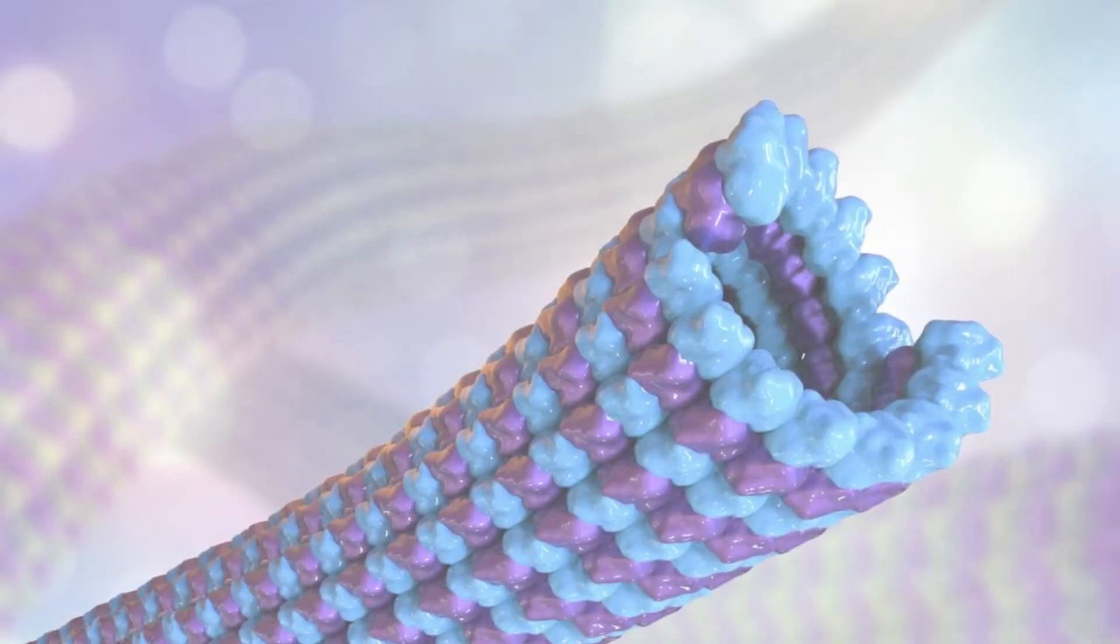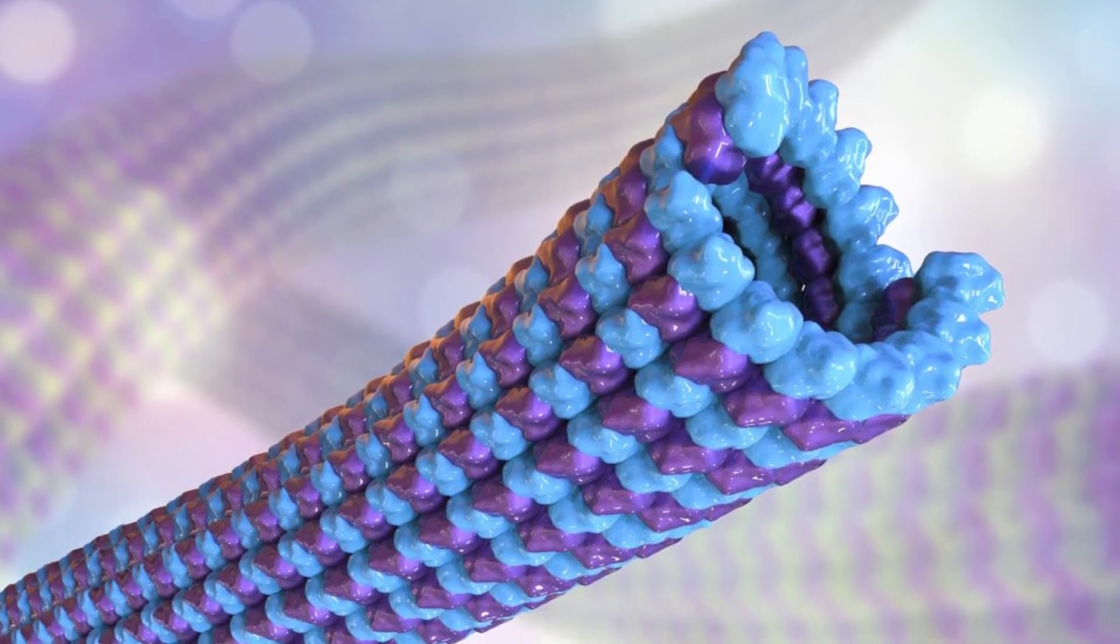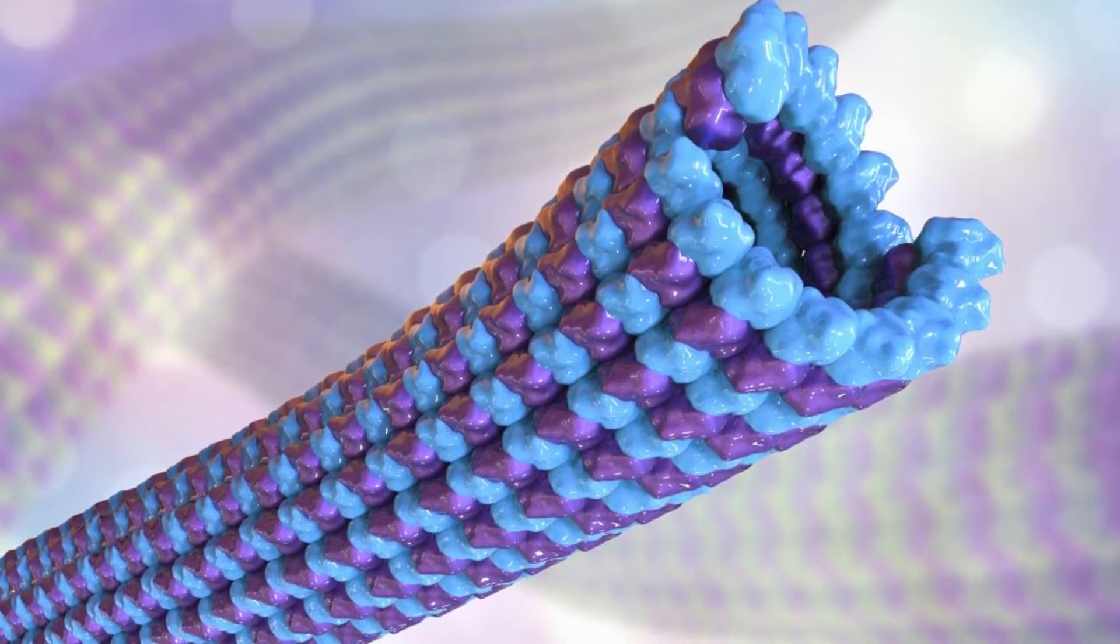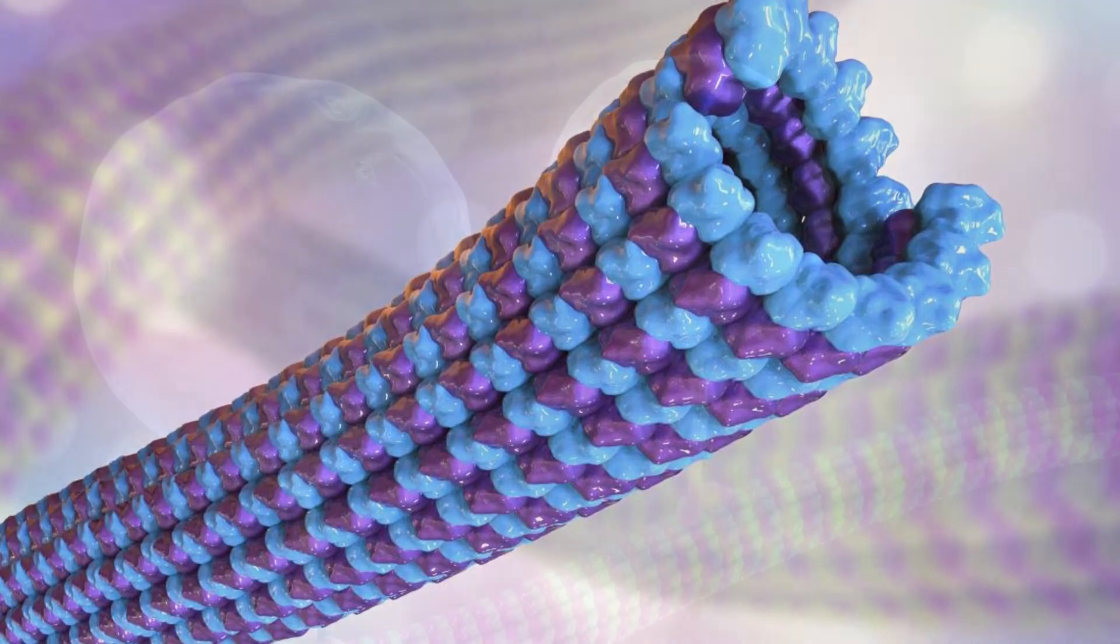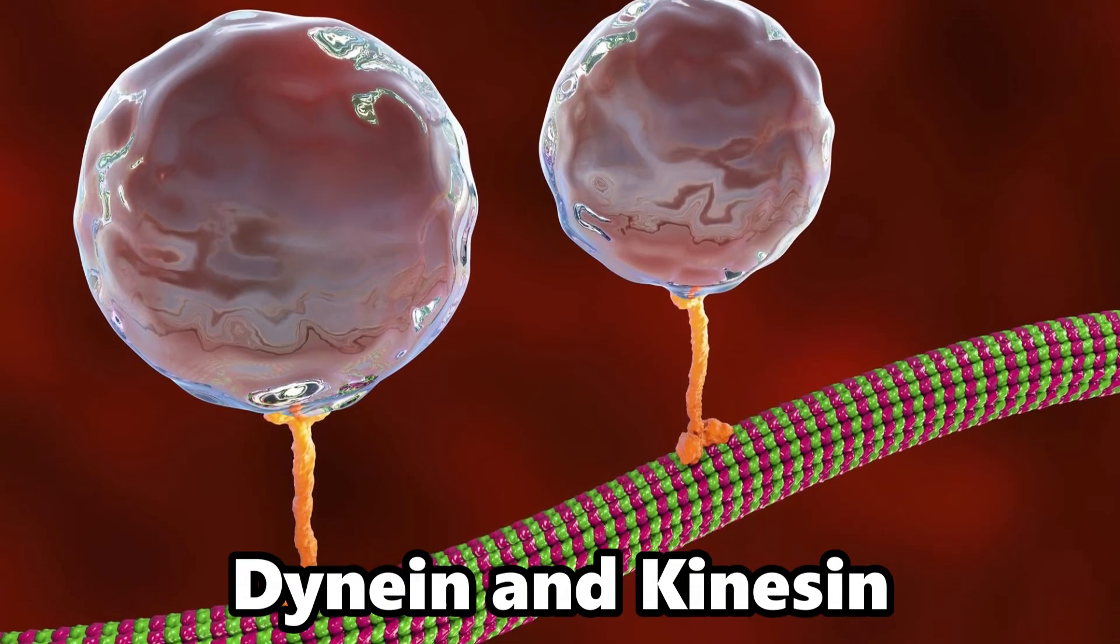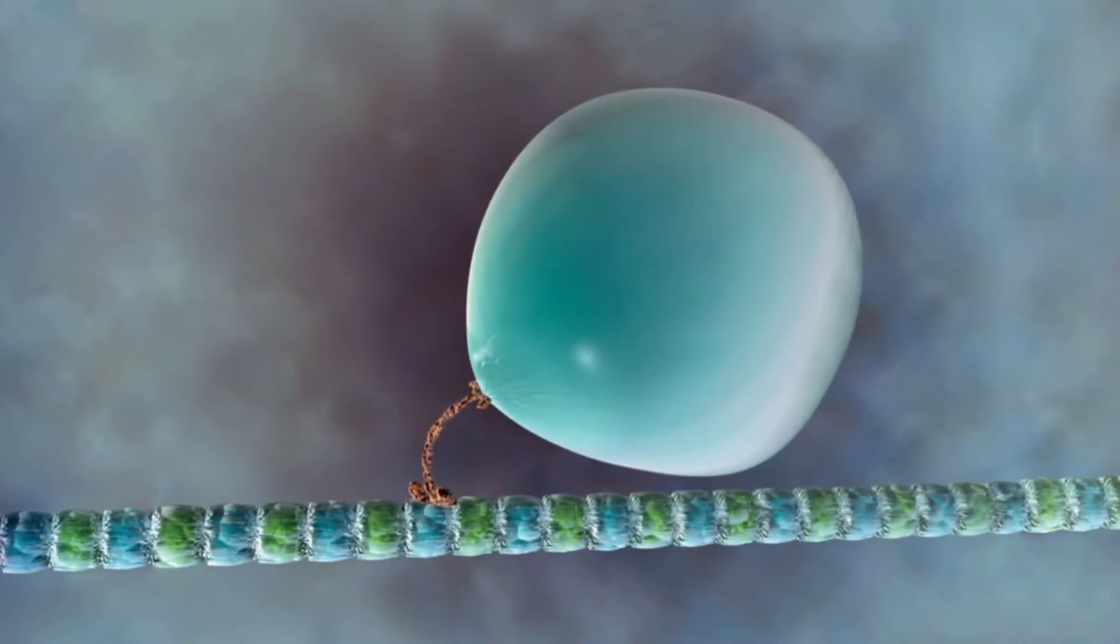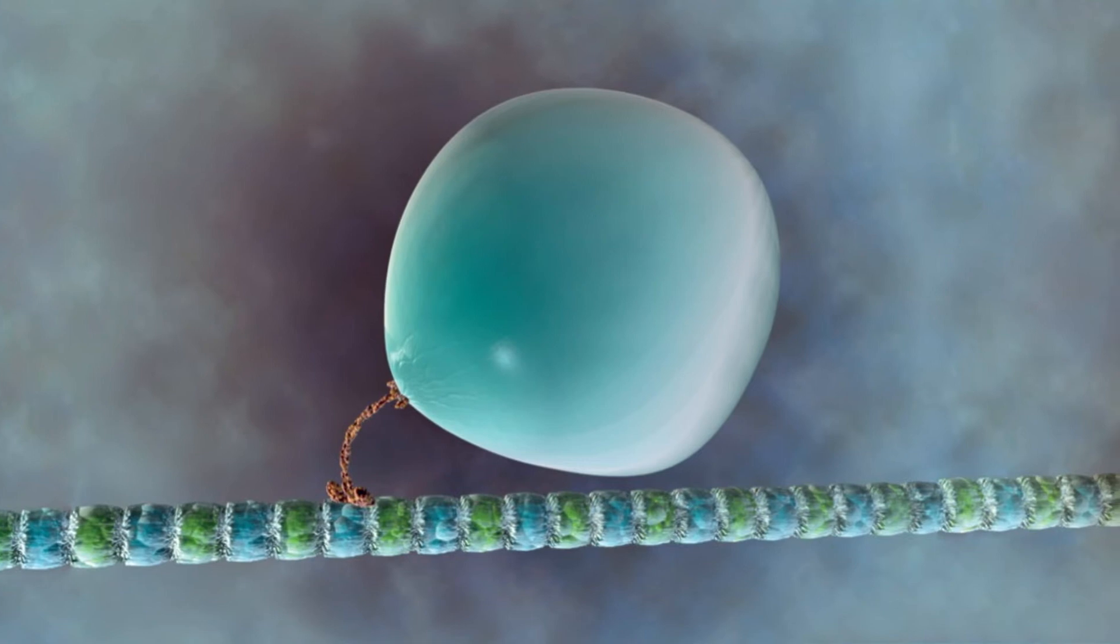Cell Motility. Apart from cilia and flagella, centrioles play a role in cell motility through the organization of microtubules that serve as tracks for motor proteins. These motor proteins, such as dynein and kinesin, move along microtubules and transport cellular cargo, allowing cells to move and transport materials within the cell.